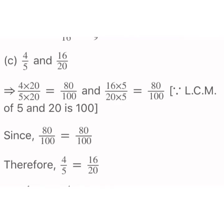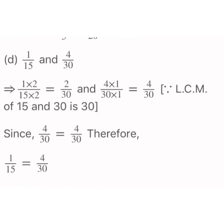The fraction 16 upon 20 is multiplied by 5: 16 multiplied by 5 and 20 multiplied by 5 gives 80 upon 100. So 80 upon 100 equals 80 upon 100 — both fractions give equal numerators. That means 4 upon 5 and 16 upon 20 are equivalent fractions.